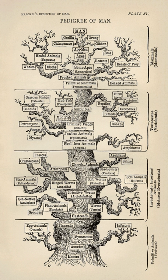Evolution is the central unifying concept in biology. Biology can be divided in various ways. One way is by the level of biological organization, from molecular to cell, organism to population. An earlier way is by perceived taxonomic group, with fields such as zoology, botany, and microbiology, reflecting what were once seen as the major divisions of life.